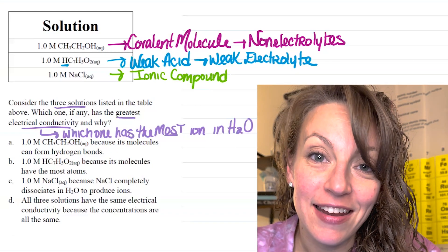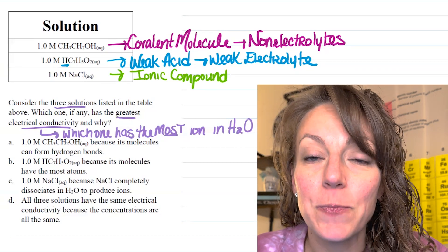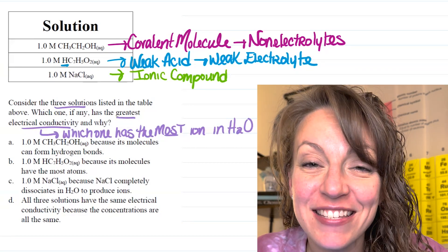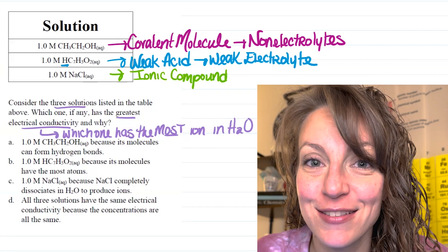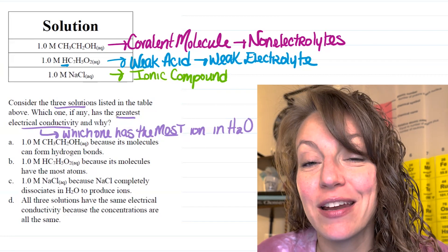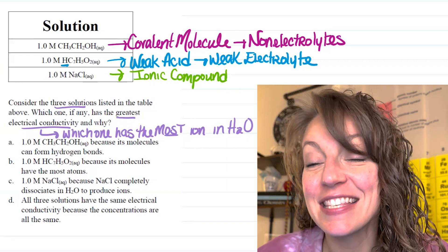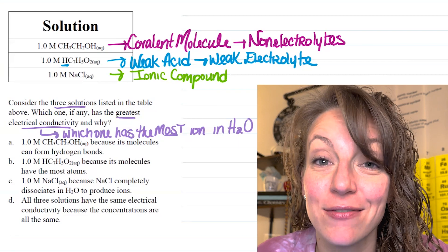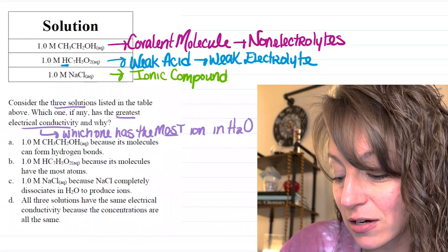Now, ionic compounds form by an ionic bond, which is the electrostatic attraction between oppositely charged ions. So, here, when an ionic compound is placed into water, it's going to dissociate and form lots of ions, making this particular species a strong electrolyte.